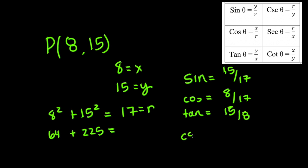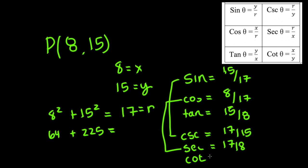Now for the reciprocal functions. Our cosecant, which is the reciprocal of sine, is going to be 17 over 15. Our secant, which is the reciprocal of cosine, is going to be 17 over 8. And our cotangent, which is the reciprocal of tangent, is going to be 8 over 15.